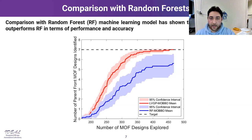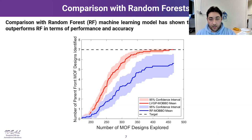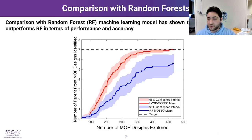Finally, we compared our framework with a random forest algorithm, which is also able to incorporate discrete values or qualitative variables into machine learning. Our approach, shown in red, is much better at identifying high-performing designs and is more robust, as evidenced by the low confidence interval.